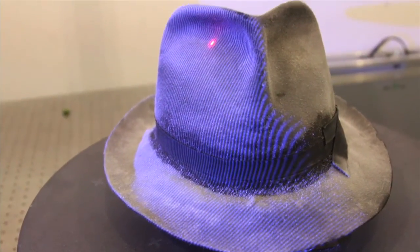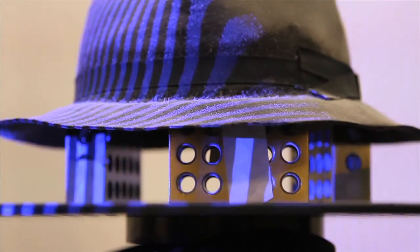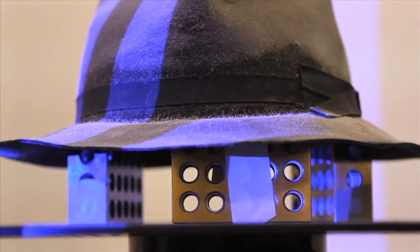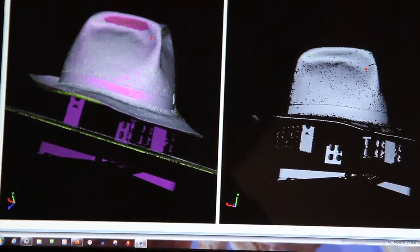What we have here is a blue light scanner. We can scan this hat using blue light. It's the next generation of white light scanning. This particular camera has 5 million pixels and it has a projector, so we project a pattern and you can see the pattern on the object.